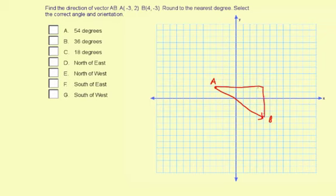I'm just making a right triangle here so we can figure out the direction of the vector. It goes 1, 2, 3, 4, 5, 6, 7 to the right and 5 down.